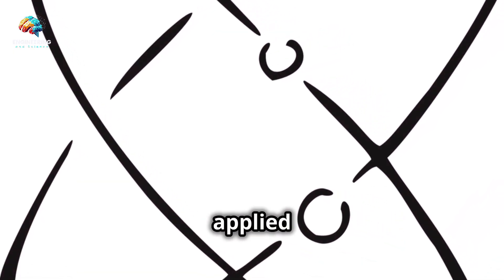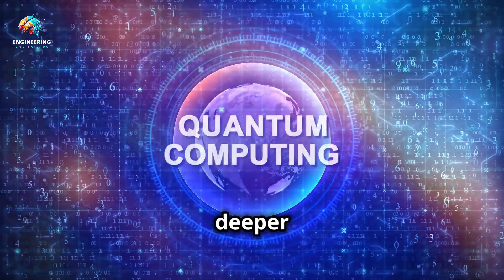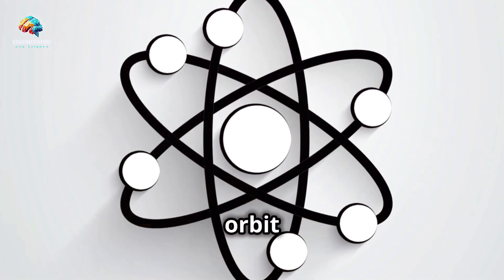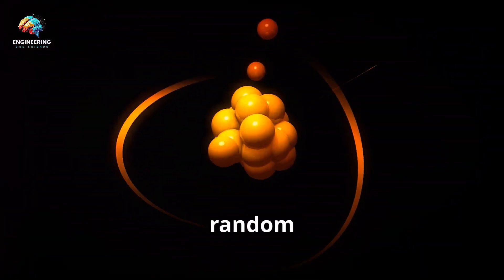Furthermore, Niels Bohr applied Planck's quantum theory to the structure of the atom, providing deeper insights into atomic behavior. He proposed that electrons orbit the nucleus in specific energy levels rather than in random paths.